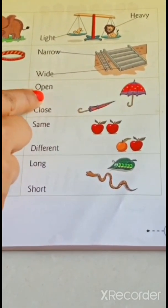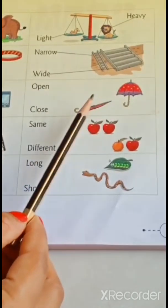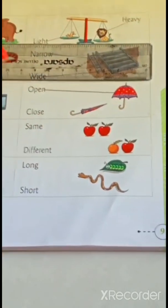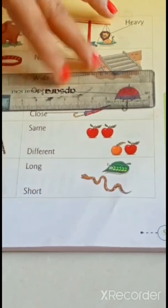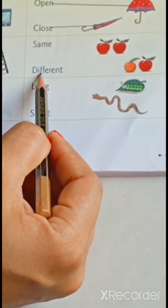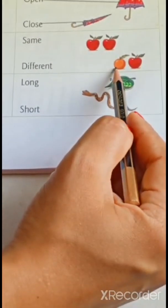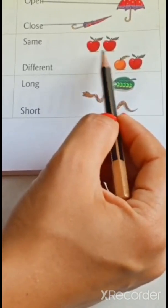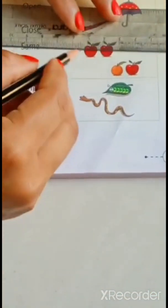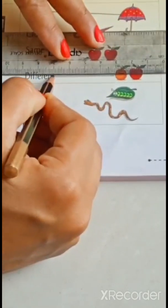Next. O-P-E-N open and C-L-O-S-E close. So, which umbrella is open? This one or this one? Yes. This umbrella is open. So, join like this. And this is close umbrella. So, join like this. Now, next. Now, next. S-A-M is same. And D-I-F-F-E-R-E anti-different. Here are two apples. And here orange and one apple. So, which pair is same? This pair or this pair? Yes. Yes. These apples are same. So, join this way. Same. And orange and apple are different. So, join like this.